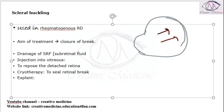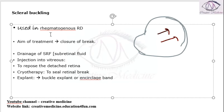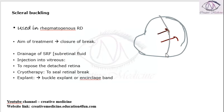Alternatively, an explant can be used — either a buckle or a circular encirclage band. You put a buckle or encirclage band around the eyeball so that it pushes the retina back to its original position, preventing it from detaching again.